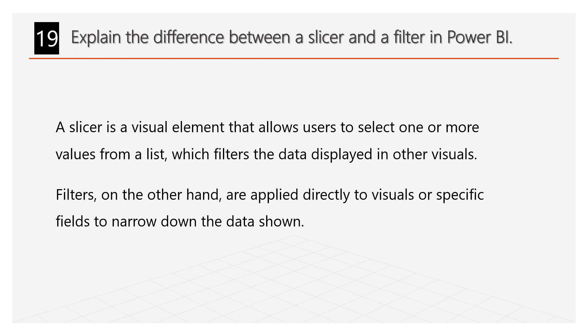Explain the difference between a slicer and a filter in Power BI. A slicer is a visual element that allows users to select one or more values from a list, which filters the data displayed in other visuals. Filters, on the other hand, are applied directly to the visuals or specific fields to narrow down the data shown.